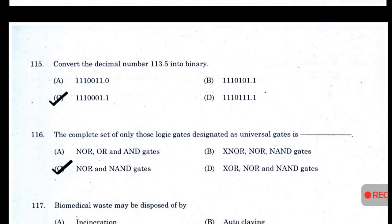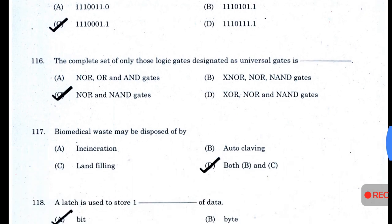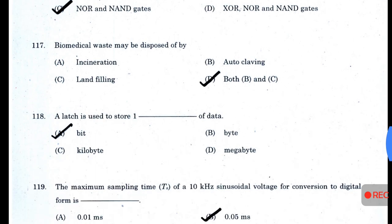Convert the decimal number 113.5 into binary — answer C. The complete set of universal gates is NOR and NAND gates. Biomedical waste may be disposed of by autoclaving and landfilling — answer D, both B and C (incineration alone is wrong). A latch is used to store one bit of data.